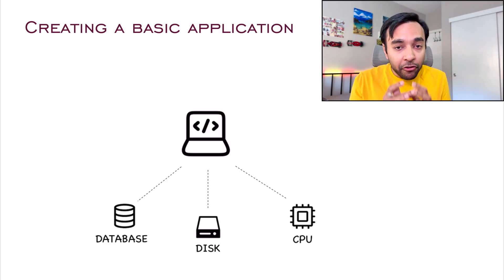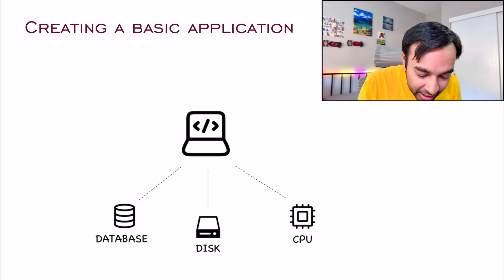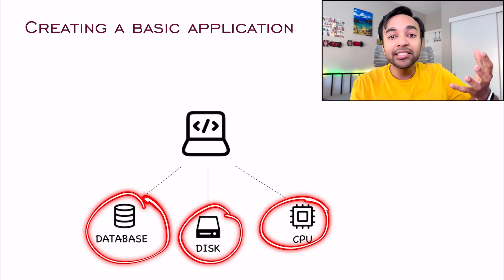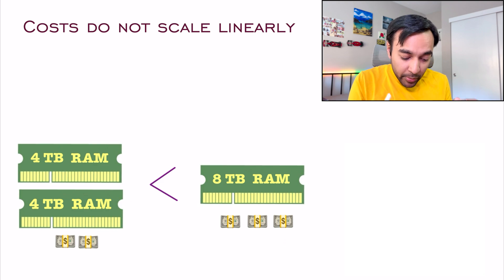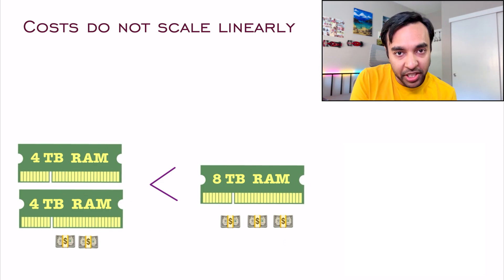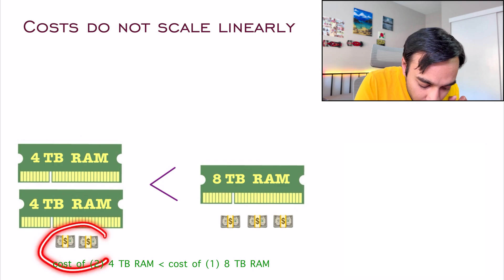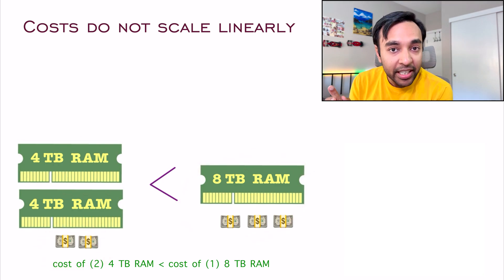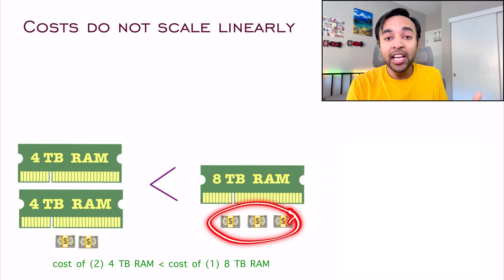But do you see the problem? If you have to deal with millions of users — think about Facebook — you cannot expect to keep on increasing your disk, database, and CPU. You are limited. You do not have a faster CPU beyond a particular limit. Another factor is that when you are dealing with such large memories, the cost of things also starts to grow. If you are taking two RAM sticks of 4 TB each, they will cost you less than a single piece of 8 TB RAM — so the price required is not linear. You cannot keep on increasing your RAM continuously.